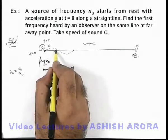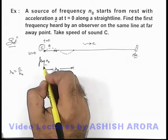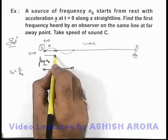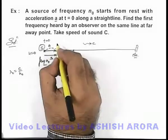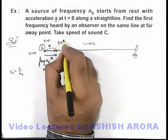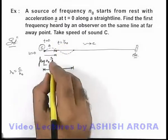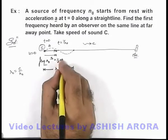And in one oscillation, source will also travel some distance. And the distance source will have covered will be s in the duration from t = 0 to t = 1/n₀, and this distance s can be written as ½at².